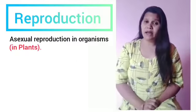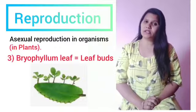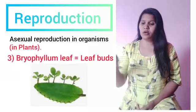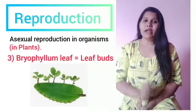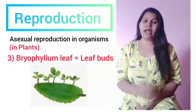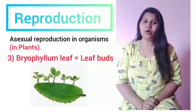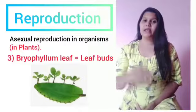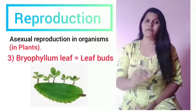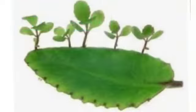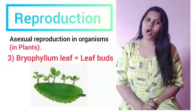On the other hand, in Bryophyllum leaf, asexual reproduction takes place through a notch-like structure on the margin of the leaf. These notches produce bud-like structures which later develop adventitious roots. At some stage, the buds detach or fall off from the margin of the leaf and grow into new individuals.